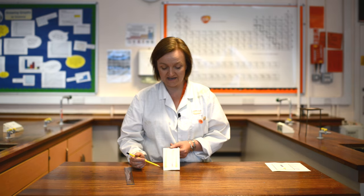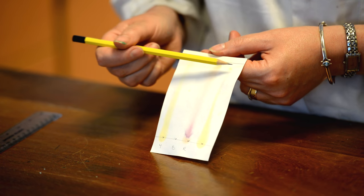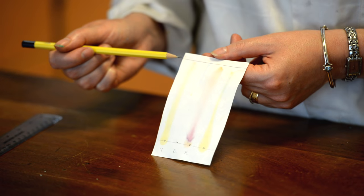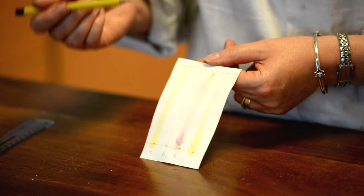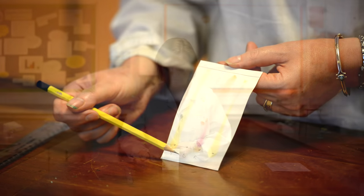So we have left the chromatography in the solvent for about 15 minutes, and the water has made its way up the paper. You'll see I've also put another pencil line now near the top of the paper, and this is the distance that the water traveled. I've taken it out, I've let it dry, and now we can look at the three known food dye colors and compare it to our unknown.